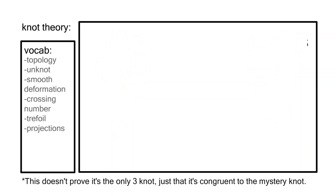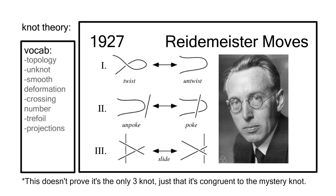In 1927, Kurt Reidemeister developed the Reidemeister moves. Using the idea that you can stretch, bend, and twist, he identified three moves that can tangle or untangle knots.